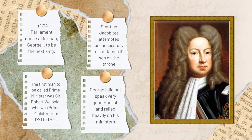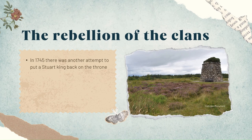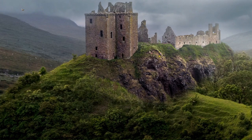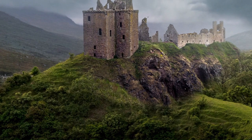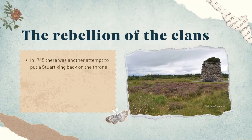The Rebellion of the Clans. In 1745 there was another attempt to put a Stuart King back on the throne in place of George II. Charles Edward Stuart, also known as Bonnie Prince Charlie, the grandson of James II, landed in Scotland. He was supported by clansmen from the Scottish Highlands and raised an army. Charles initially had some successes but was defeated by George II's army at the Battle of Culloden in 1746. Charles escaped back to Europe. The clans lost a lot of their power and influence after Culloden. Chieftains became landlords if they had the favour of the English king, and clansmen became tenants who had to pay for the land they used.